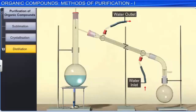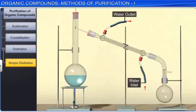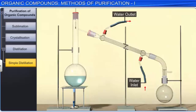Distillation is used for separating volatile liquids from non-volatile impurities and also to separate liquids which differ in their boiling points. Simple distillation is used when the liquids in the mixture differ appreciably in their boiling points. For example, a mixture of chloroform and aniline, which differ in boiling point by 123 degrees Celsius, is separated by this technique.